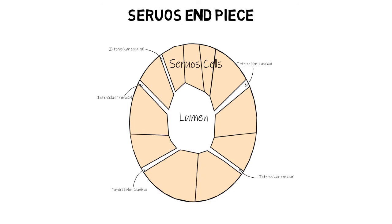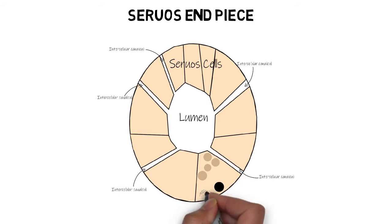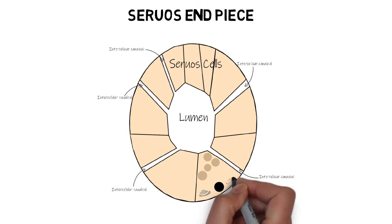The serous cells are pyramidal in shape. They have a typical spherical nucleus directed basally inside the cells. They also have numerous secretory granules in which macromolecules of saliva are stored. These secretory granules are formed within the Golgi complex of the serous cells. Serous cells also contain other typical organelles like mitochondria, lysosomes, and peroxisomes.